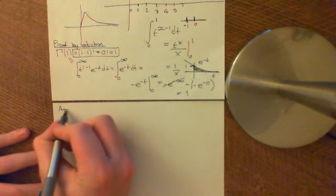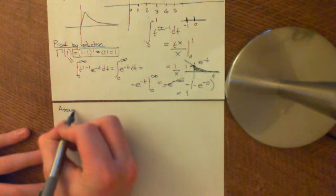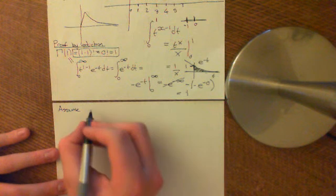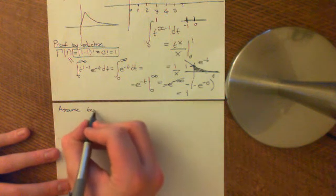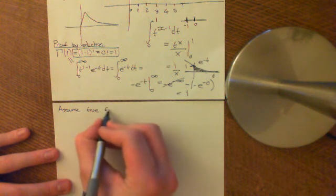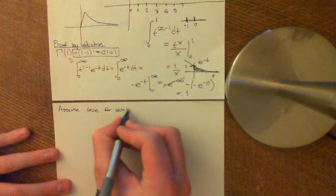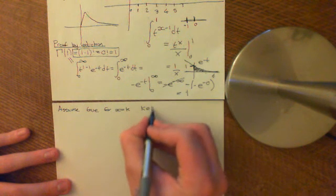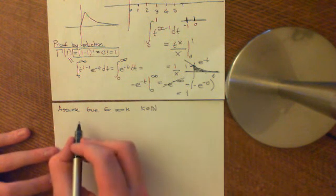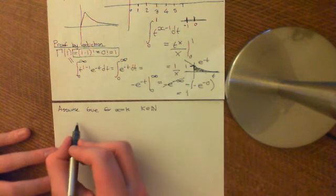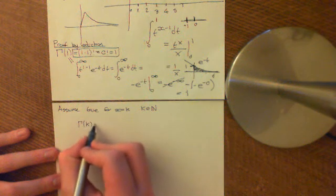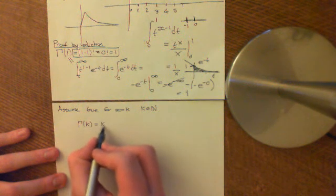Next is the assumption step. We assume the statement is true for x equal to k, where k is a natural number. That means gamma of k is equal to k minus one factorial.